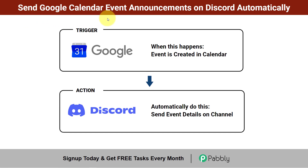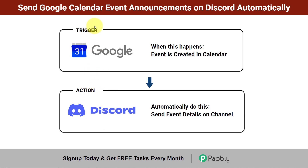In this video I'll show you how to send Google Calendar event announcements on Discord automatically. Assume that you have created an event in Google Calendar and after every event creation you have to manually copy the details and do the announcements on your Discord channel manually again and again. But you can entirely automate this process — every time an event is created in Google Calendar, the event details will be shared automatically in your Discord channel without doing anything manually.